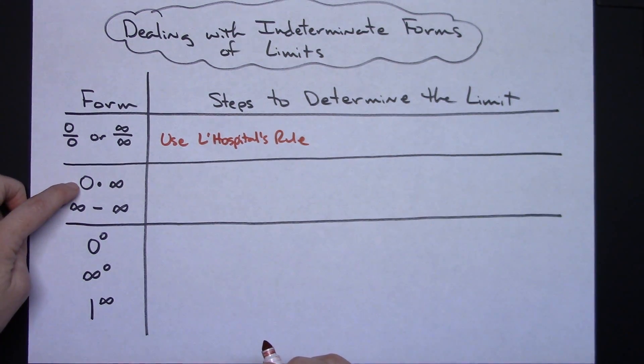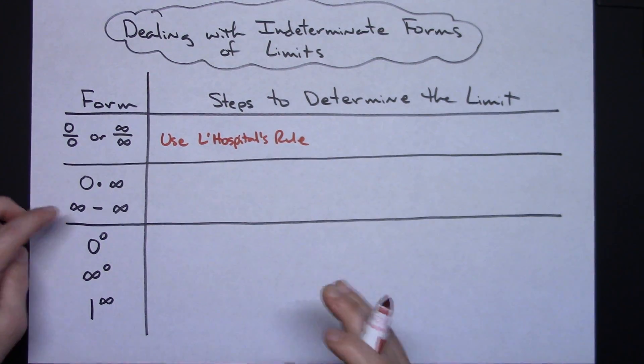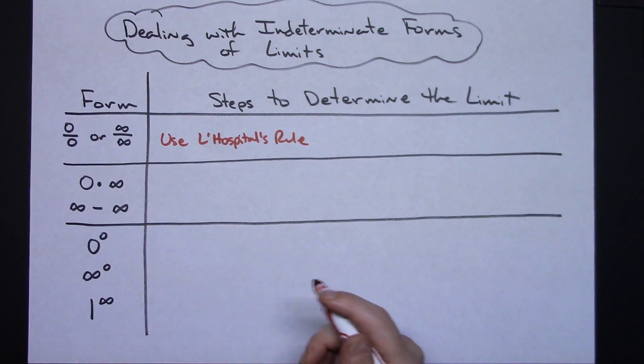If we encounter zero times infinity or infinity minus infinity, either of these forms, we've got a two-step process here.